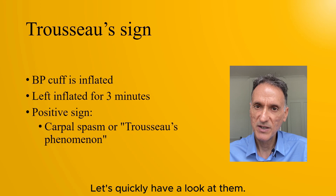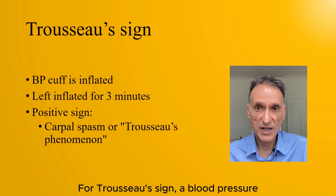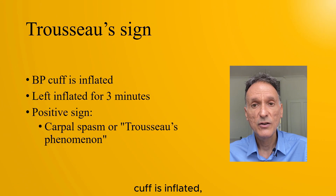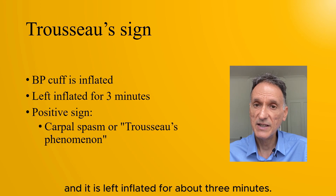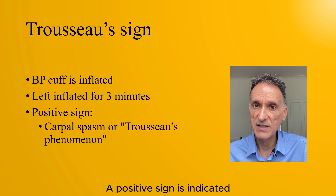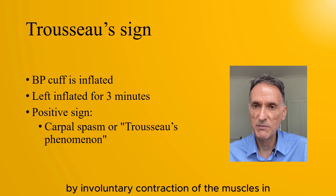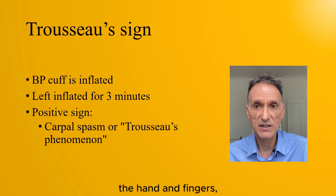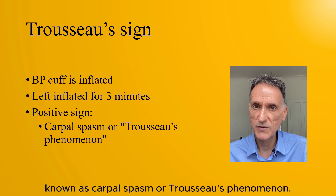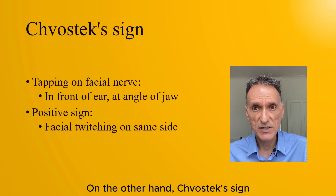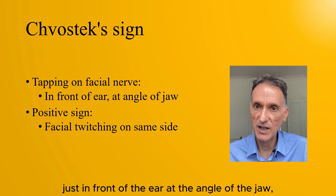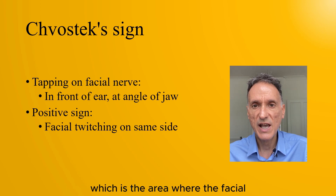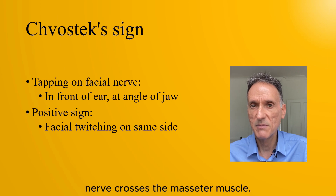Let's quickly have a look at them. For Trousseau's sign, a blood pressure cuff is inflated, usually about 20 mmHg above the systolic blood pressure, and it is left inflated for about 3 minutes. A positive sign is indicated by involuntary contraction of the muscles in the hand and fingers, known as carpal spasm or Trousseau's phenomenon. Chvostek's sign is performed by tapping on the facial nerve, just in front of the ear, at the angle of the jaw, which is the area where the facial nerve crosses the masseter muscle.